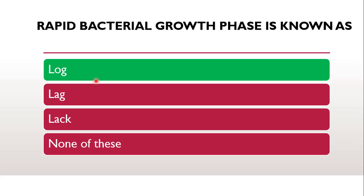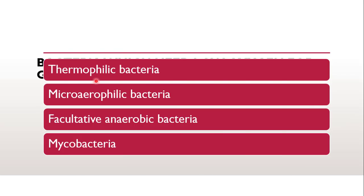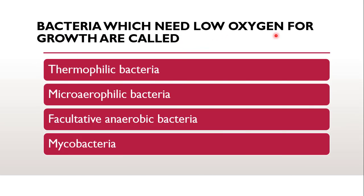Next question: bacteria which need low oxygen for the growth rate are called whether they are thermophilic bacteria, whether they are micro aerophilic bacteria, whether they are facultative anaerobic bacteria, or mycobacteria. As the name suggests, 'micro' means very small quantities and 'aerophilic' means air-loving or oxygen-loving. So bacteria which need low oxygen for the growth rate are micro aerophilic bacteria.